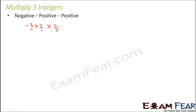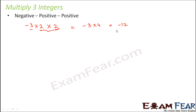Multiplying a positive integer with a positive integer will give you a positive result. So you can multiply them first — two times two is four. Now you are left with two integers: a negative integer and a positive integer. When you multiply a negative and a positive, you simply find the product and put a negative sign. This is how you handle this scenario.